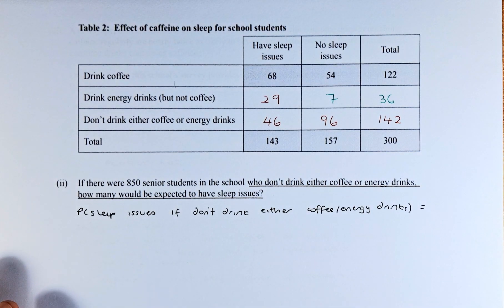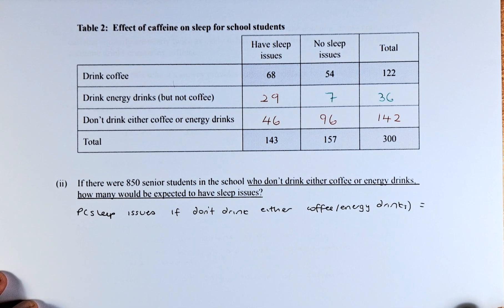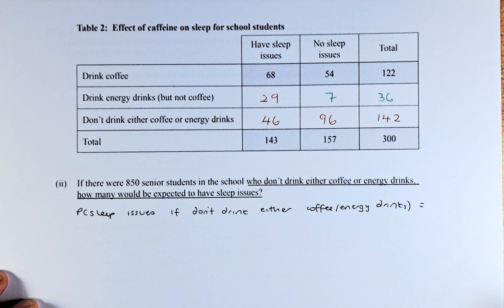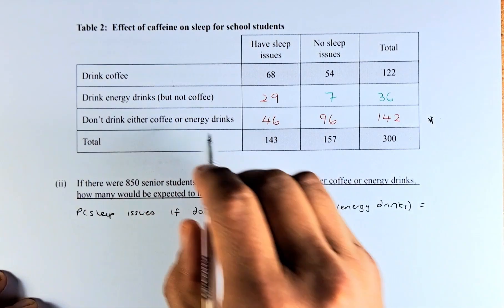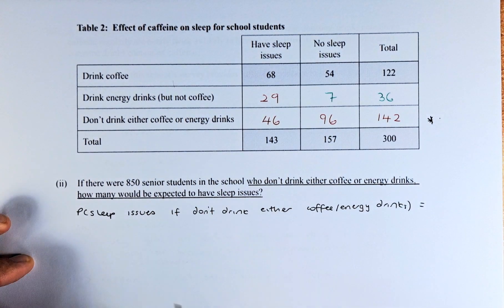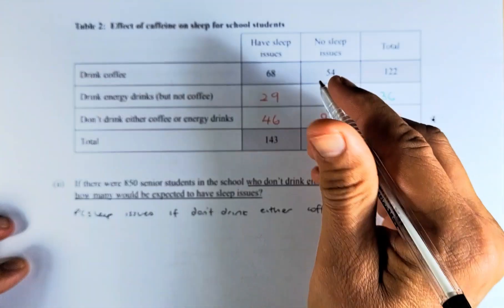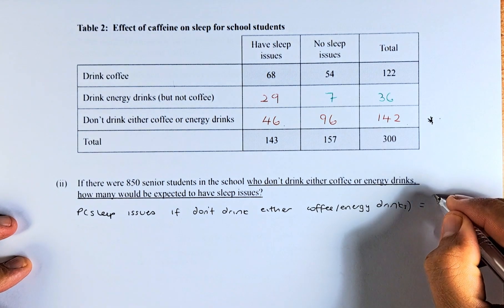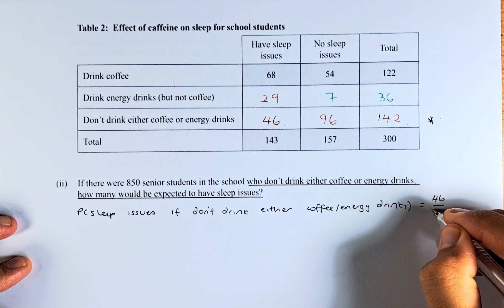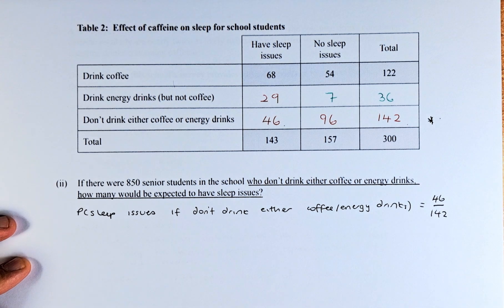Now we need to answer the question below. If there were 850 senior students in the school who don't drink either coffee or energy drink, how many would you expect to have sleep issues? We are looking at students who do not drink coffee or energy drink. The probability that they have sleep issues is 46 out of 142 — that is the probability of students who have sleep issues if they don't drink either of the drinks containing caffeine.